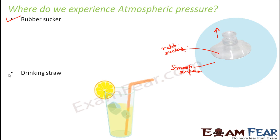Another example is the drinking straw. Whenever you go to a restaurant and order a cold drink or juice, they serve it with a straw. While drinking, you suck the straw, and you see that the liquid flows upwards. This is because when you suck the straw, the pressure inside the straw decreases.